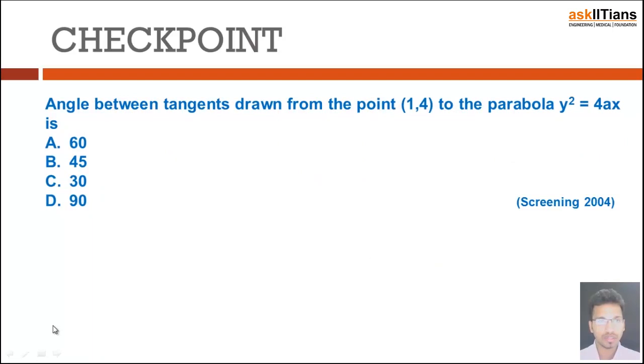Angle between the tangents drawn from the point (1, 4) to the parabola y² = 4x. In this case, because since this is a question from Screening 2004 I remember it - this is y² = 4x.